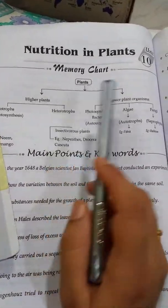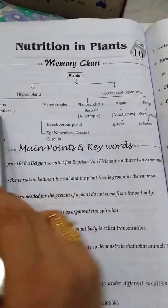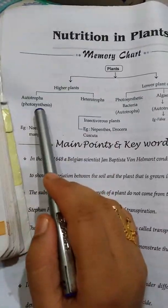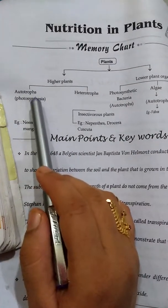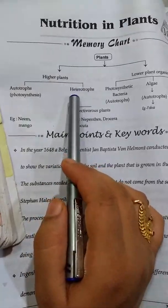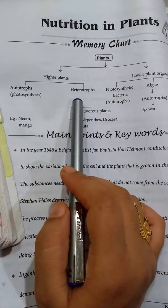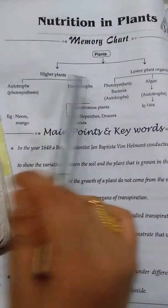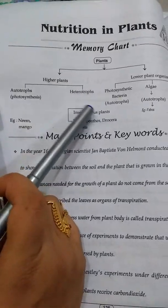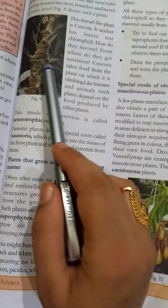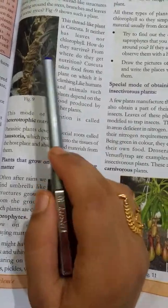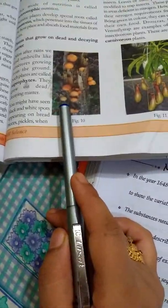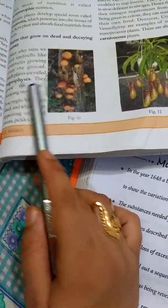Plants are divided into two groups: higher plants and lower plants. Higher plants are autotrophic plants that prepare their own food in the presence of sunlight — that is photosynthesis. Heterotrophs depend on food from other organisms. Both heterotrophic and autotrophic plants consist of organisms such as fungi, which are present in saprophytes.